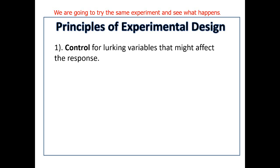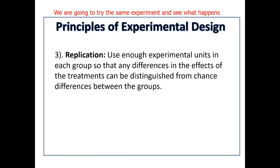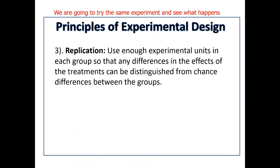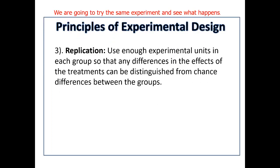Sometimes it's unethical to have a control group. We do need to make sure we're controlling for lurking variables, and one of the ways we can do this is by randomly assigning individuals into our different treatment groups, so that hopefully any lurking variables will be split up evenly amongst the groups on average. Second, we need to randomly assign in an unbiased way. This helps create roughly equivalent groups by balancing the effects of lurking variables across the treatment groups.